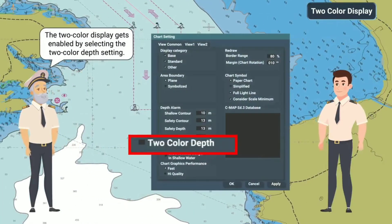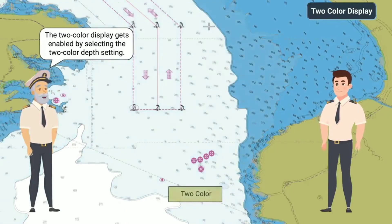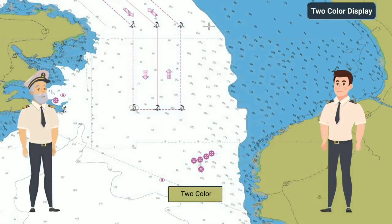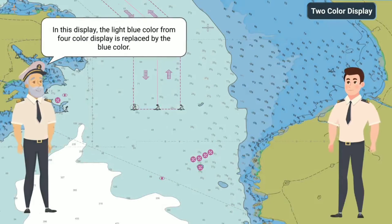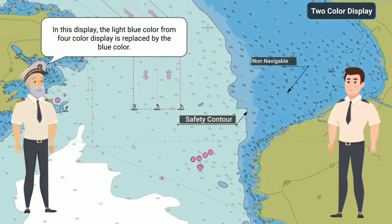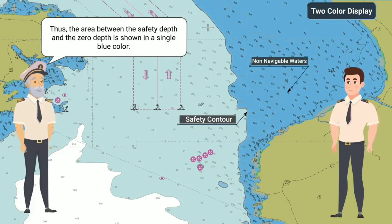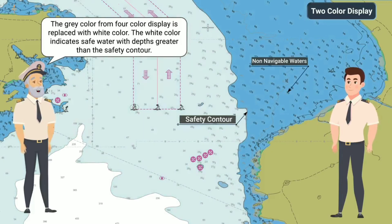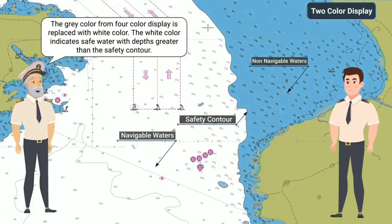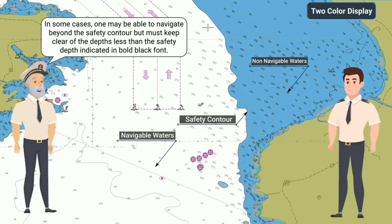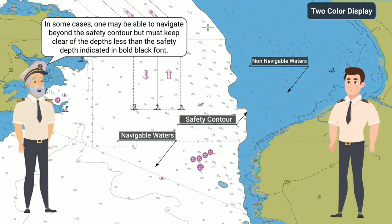The two-color display gets enabled by selecting the two-color depth setting. In this display, the light blue color from the four-color display is replaced by blue color. Thus, the area between the safety depth and the zero depth is shown in a single blue color. The grey color from the four-color display is replaced with white color, indicating safe waters with depths greater than the safety contour. In some cases, one may navigate beyond the safety contour but must keep clear of depths less than the safety depth, indicated in bold black font.